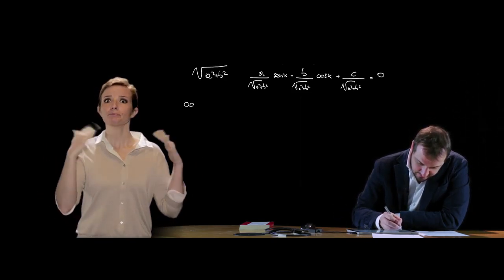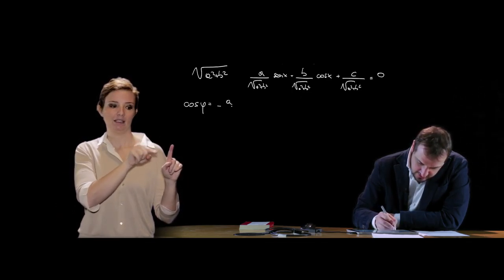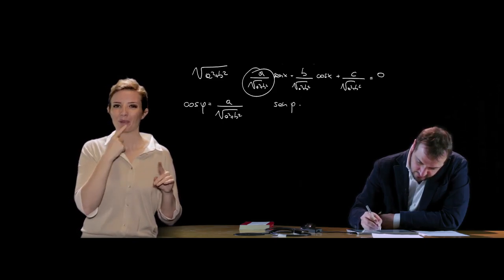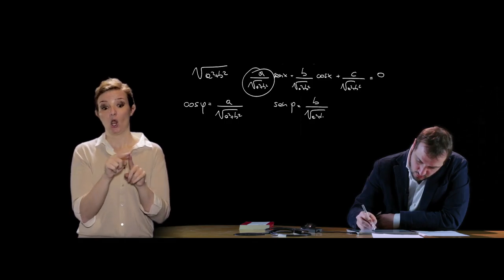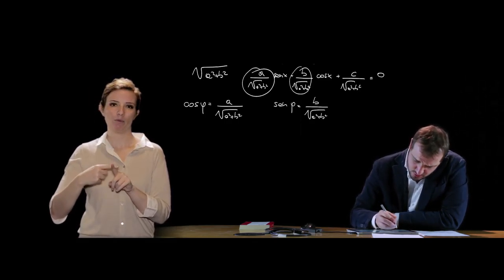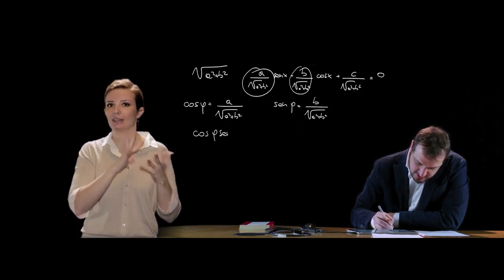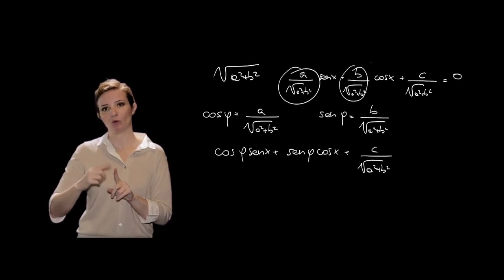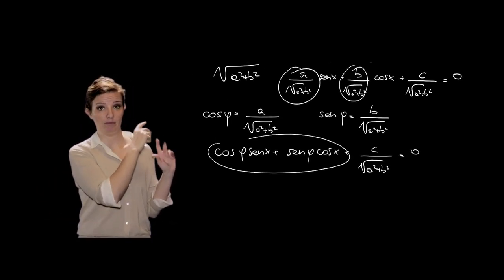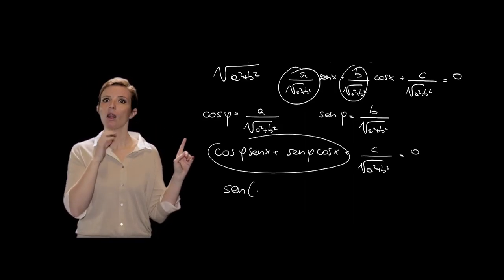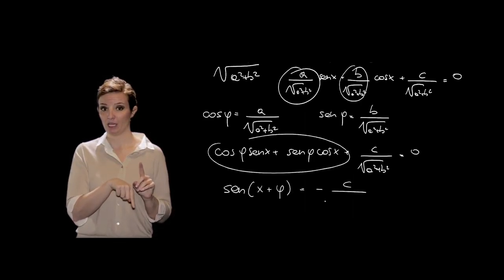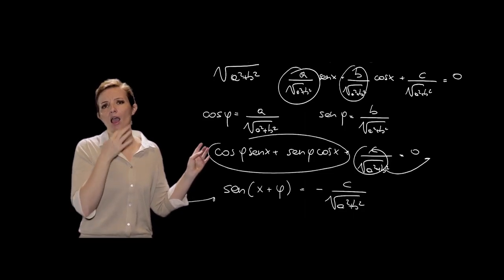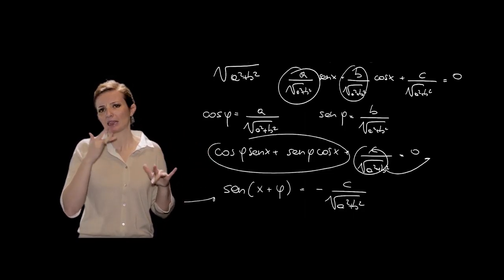Si pone a/√(a²+b²) = cos φ e b/√(a²+b²) = sin φ come angolo ausiliario φ. L'equazione lineare diventa cos φ·sen x + sin φ·cos x + c/√(a²+b²) = 0, che usando le formule di addizione del seno si scrive come sen(x + φ) = −c/√(a²+b²), risolvibile come equazione elementare in seno.